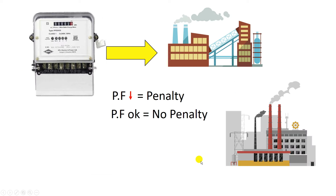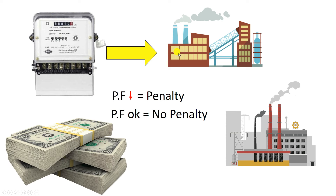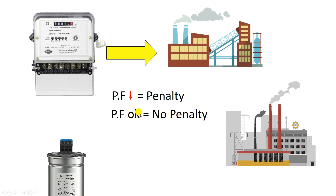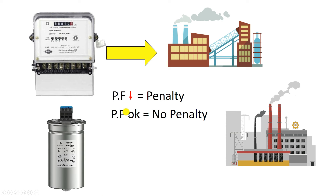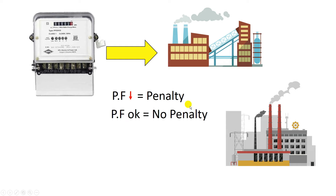As you know, a capacitor is used for correction of power factor. In that video I also told that if power factor is low in your home, you have to pay a penalty. If power factor is correct, you won't have to pay any penalty. So if power factor is low and you are paying a penalty, by connecting a capacitor you can save on your electricity bill.